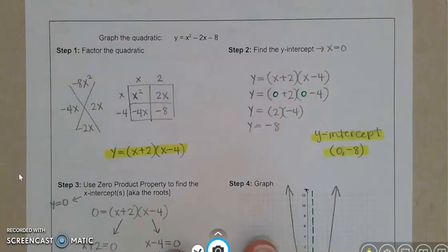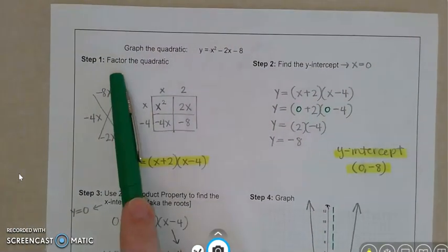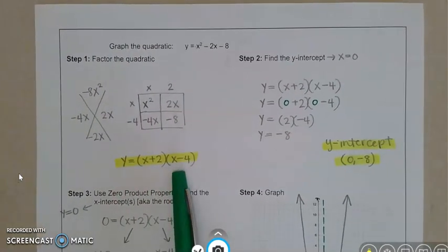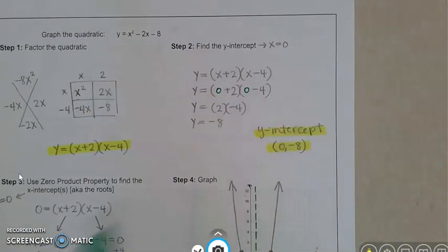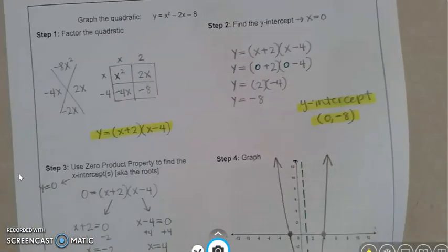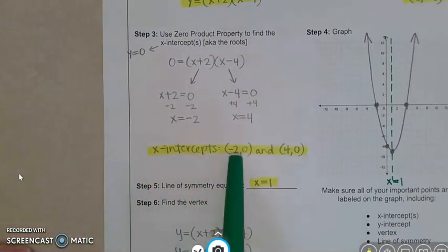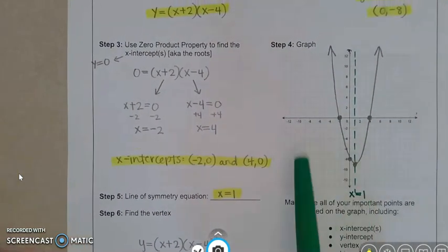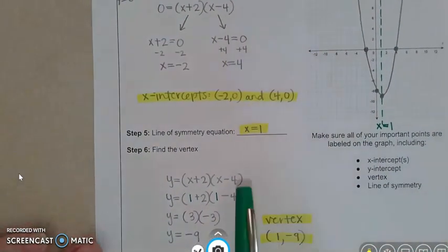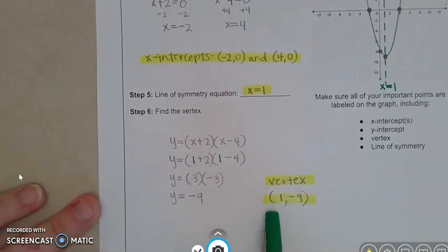All right. Feel free to pause and check my work. See how I did. For factoring the quadratic, I got y equals x plus 2, x minus 4. For step number 2, I got a y-intercept of 0, negative 8. For step number 3, zero product property, I got the x-intercepts are negative 2, 0 and 4, 0. I plotted them on my graph, although I forgot to label, so I'll do that in this video. Line of symmetry, I got x equals 1. And the vertex, I got 1, negative 9.